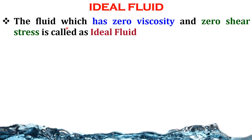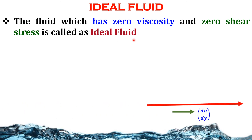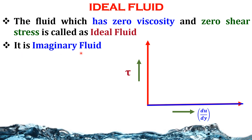Ideal fluid: The fluid which has zero viscosity and zero shear stress is called an ideal fluid. When we plot a graph between velocity gradient and shear stress, we get a straight line on the x-axis. This indicates that when velocity gradient is increased, there is no change in shear stress. It is an imaginary fluid which is not available in real conditions.